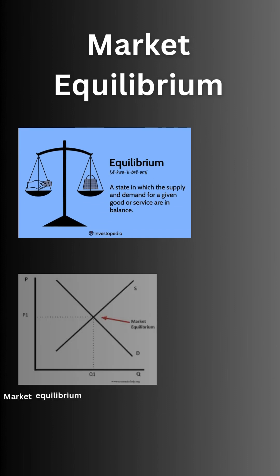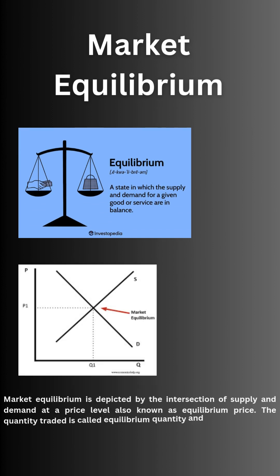Market equilibrium is depicted by the intersection of supply and demand at a price level, also known as equilibrium price. The quantity traded is called equilibrium quantity and can be calculated by drawing a line at the intersection of supply and demand.